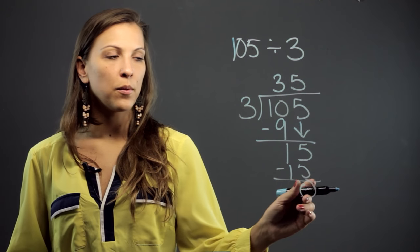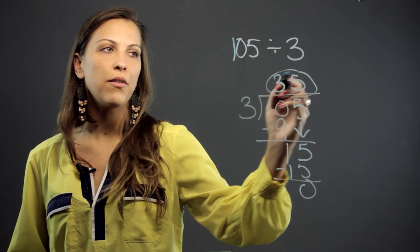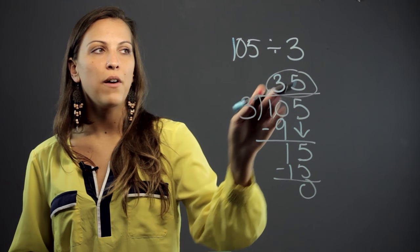And because we're left with nothing down here, that means that there is no remainder and that 35 is the quotient of 105 divided by 3.